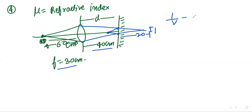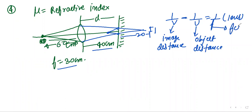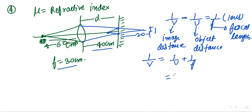Using the lens formula: 1/v − 1/u = 1/f. Here V is image distance and U is object distance. We get 1/v = 1/f + 1/u = 1/30 + 1/(−60). Taking LCM = 60: (2−1)/60 = 1/60, so v = 60 cm.